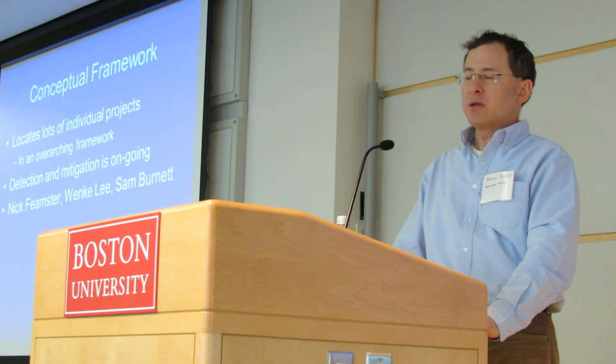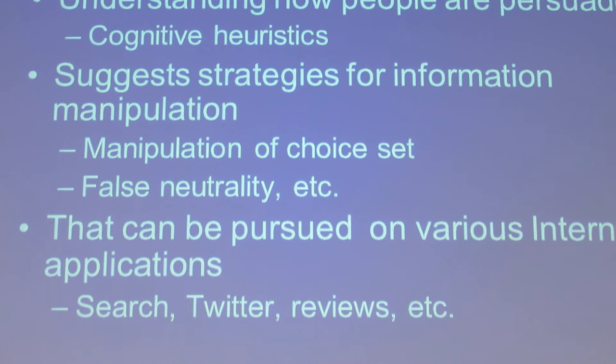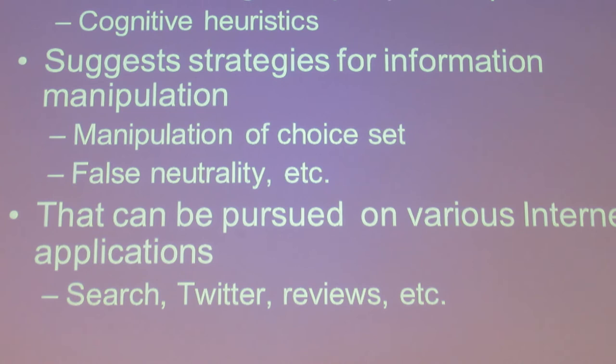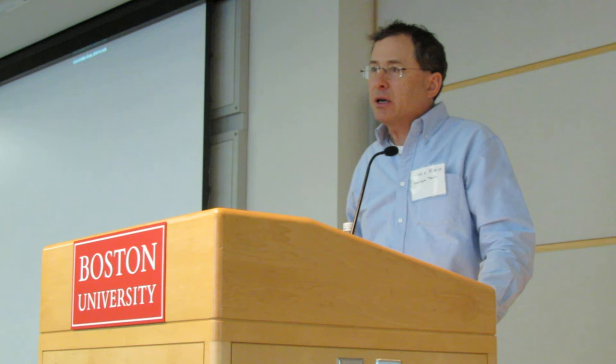The general approach is: understand how people are persuaded through their cognitive heuristics, use that to identify strategies for information manipulation that can be pursued on various internet applications. The output of an internet application presents metadata, content data, and socially structured data in such a way that it influences users. Bottom line: censorship is a big deal, but there is a lot of information manipulation around it, and as you start to look for it, it's surprisingly scary to find. Thank you.